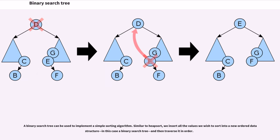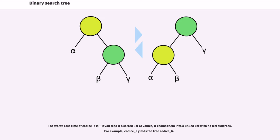A binary search tree can be used to implement a simple sorting algorithm. Similar to heap sort, we insert all the values we wish to sort into a new ordered data structure, in this case a binary search tree, and then traverse it in order. The worst case time of codice_4 is if you feed it a sorted list of values. It chains them into a linked list with no left subtrees. For example, codice_5 yields the tree codice_6.